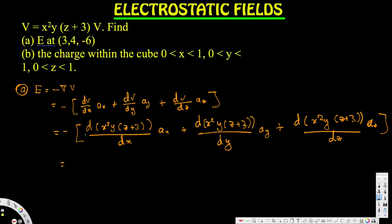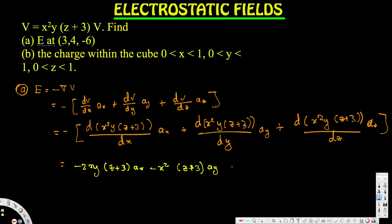Now let's simplify and take all the derivatives together. Taking the derivative gives us negative 2xy(z + 3) in the ax direction, minus x²(z + 3) in the ay direction, and minus x²y in the az direction. We get the negatives because we have the negative del V — we multiply everything by negative.